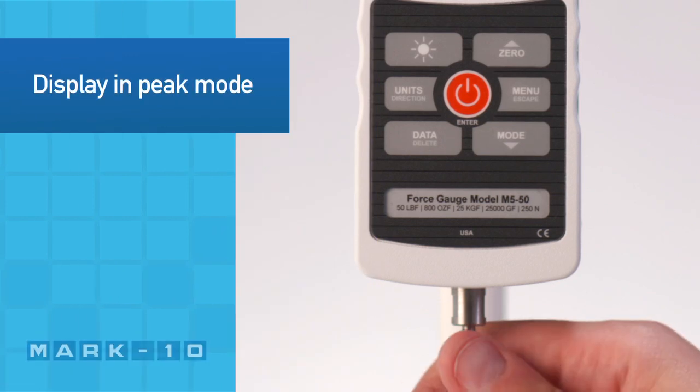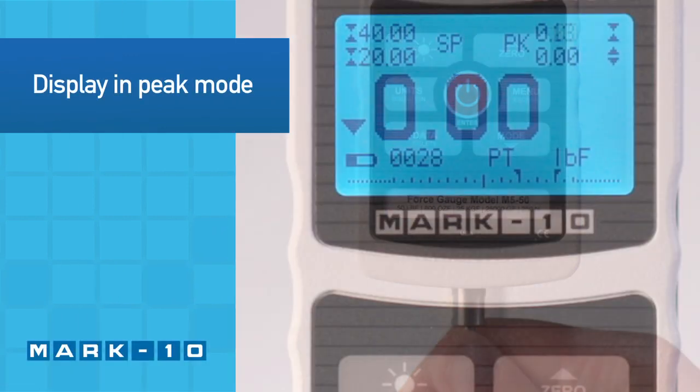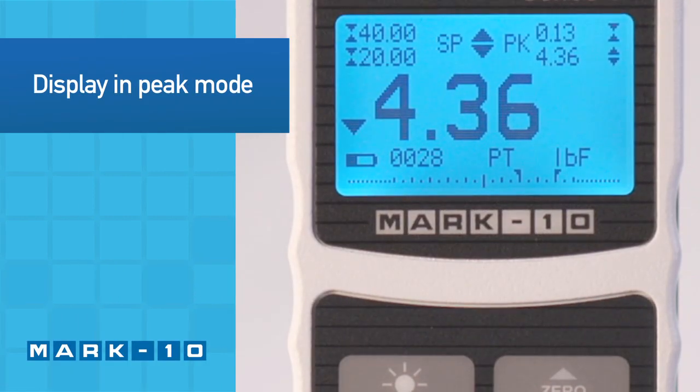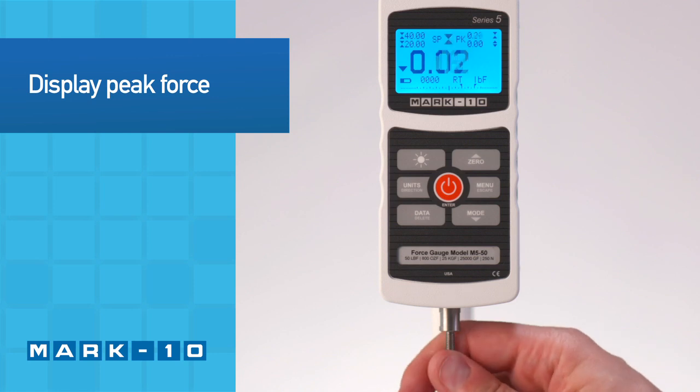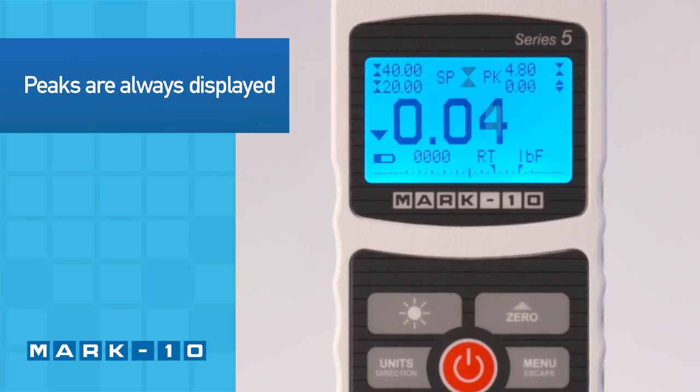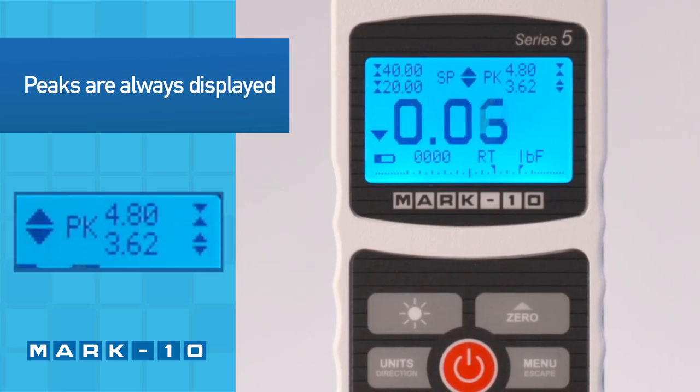In peak mode, the display freezes when the peak force has been reached. Regardless of the mode, the tension and compression peaks are always shown in the upper right corner of the display.